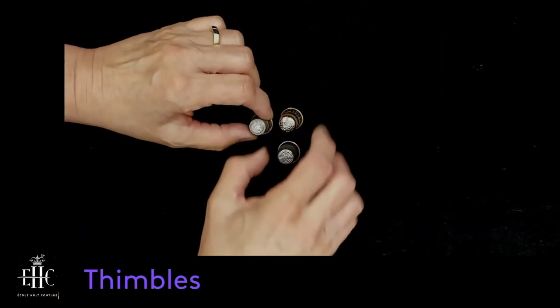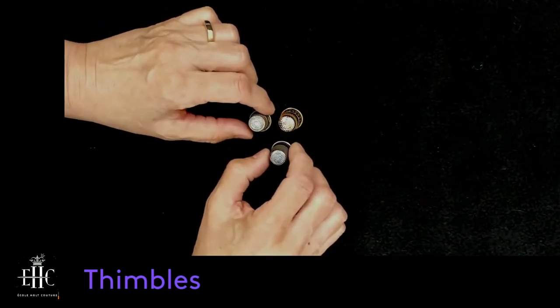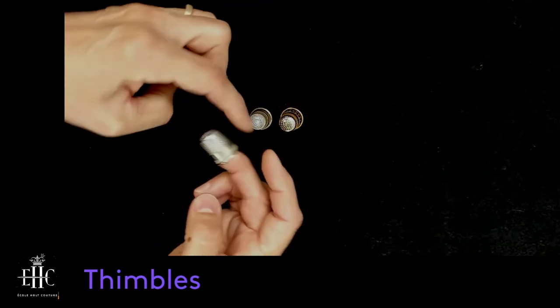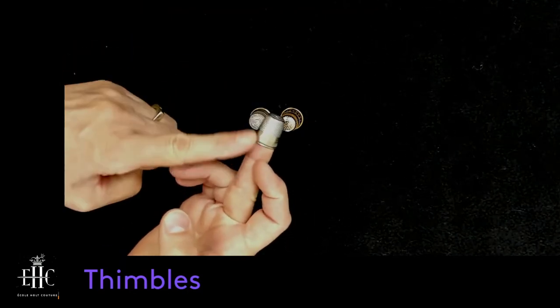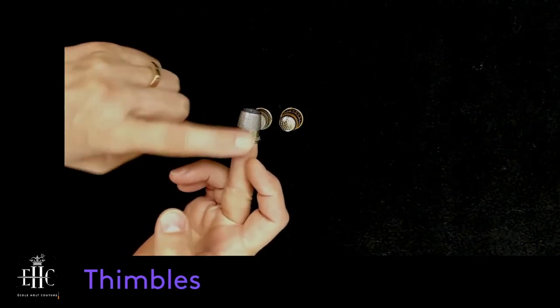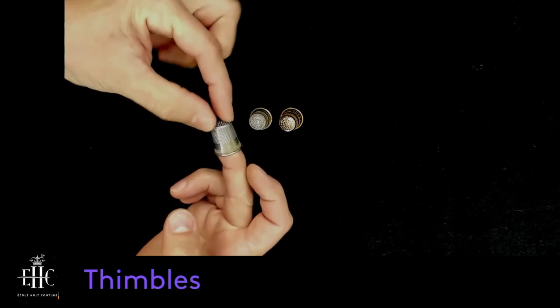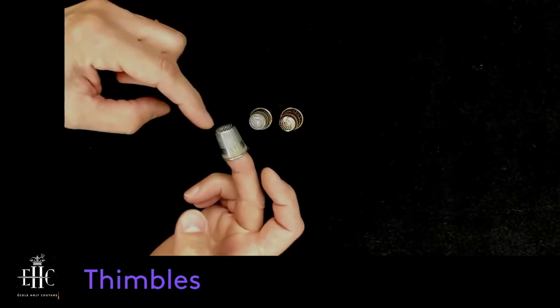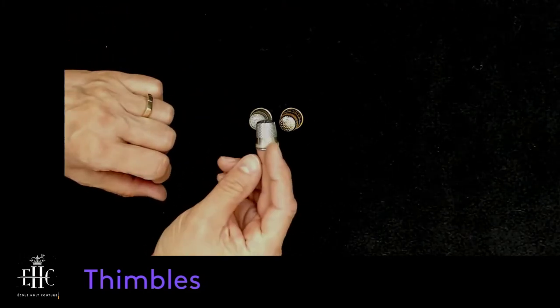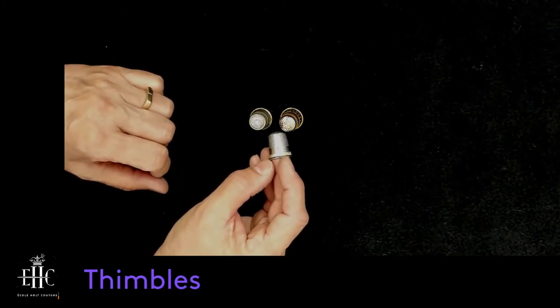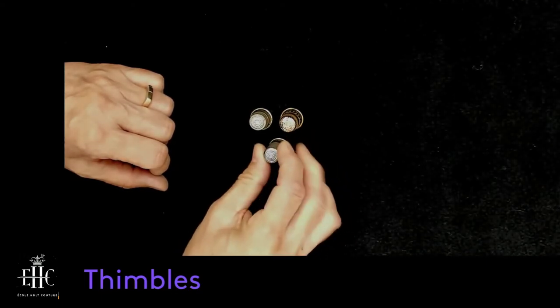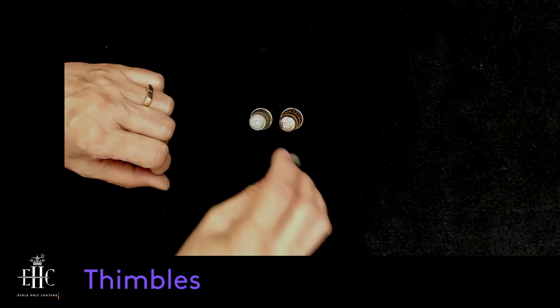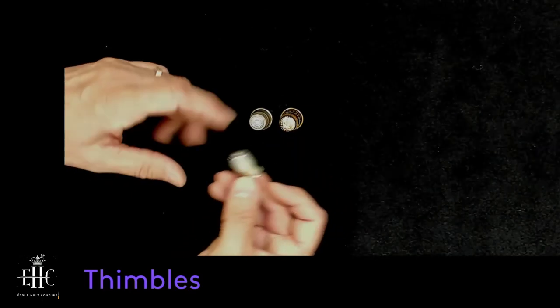So the fourth type of thimble that I want to talk about is a tailor's thimble and it goes around your finger but it's only covered on one side like a band over it or it has the shape all around but it's an open top. Okay, so those they make specifically for tailoring. Now I've never found the need to have that type of thimble when this one will work perfectly well for couture sewing and for tailoring.